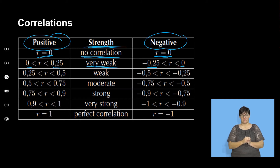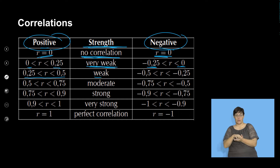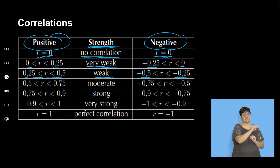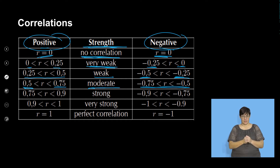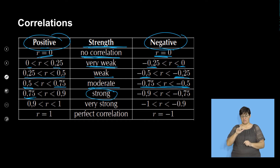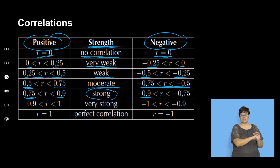Weak correlation is 0.25 to 0.5, and negative 0.5 to negative 0.25 is weak negative correlation. Moderate correlation is 0.5 to 0.75 — and also can be negative, so negative 0.75 to negative 0.5 is negative moderate correlation. Strong positive correlation is 0.75 to 0.9, and negative 0.9 to negative 0.75 is negative strong correlation.